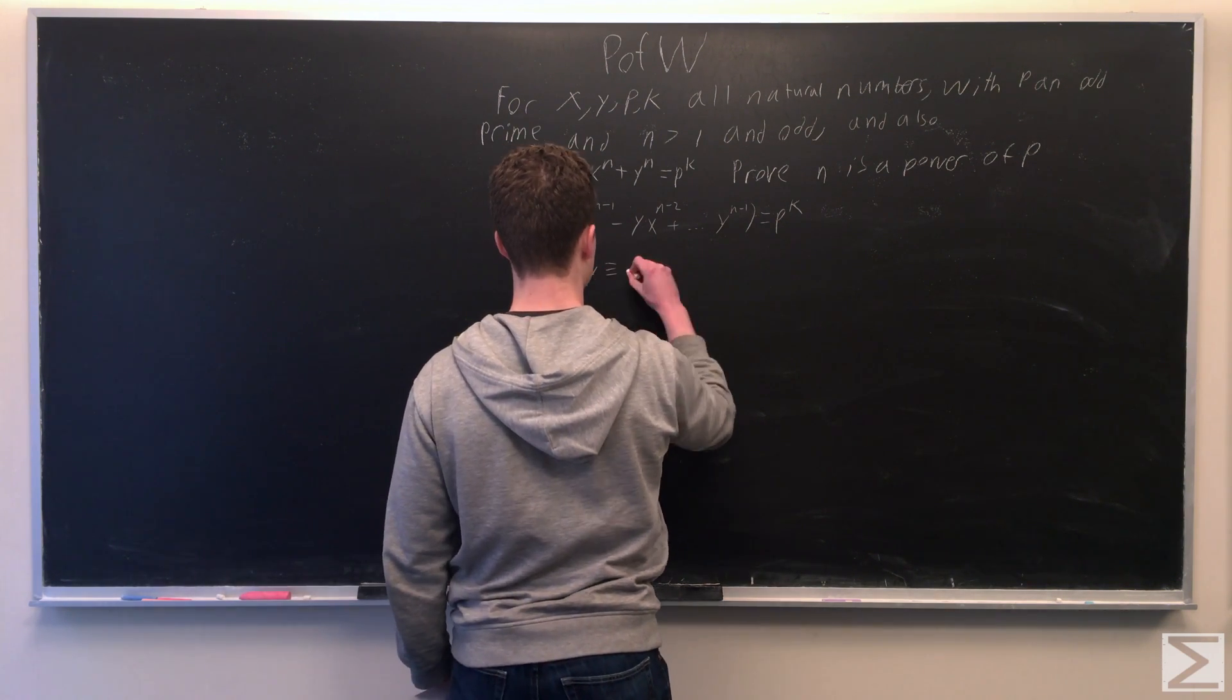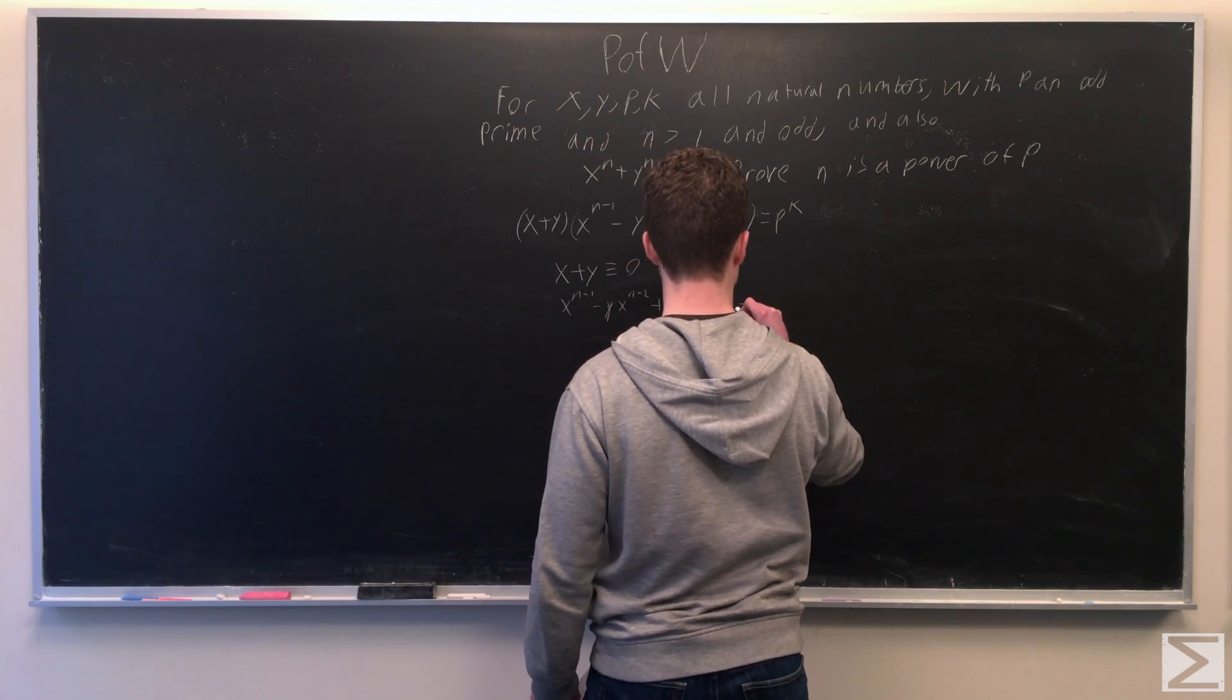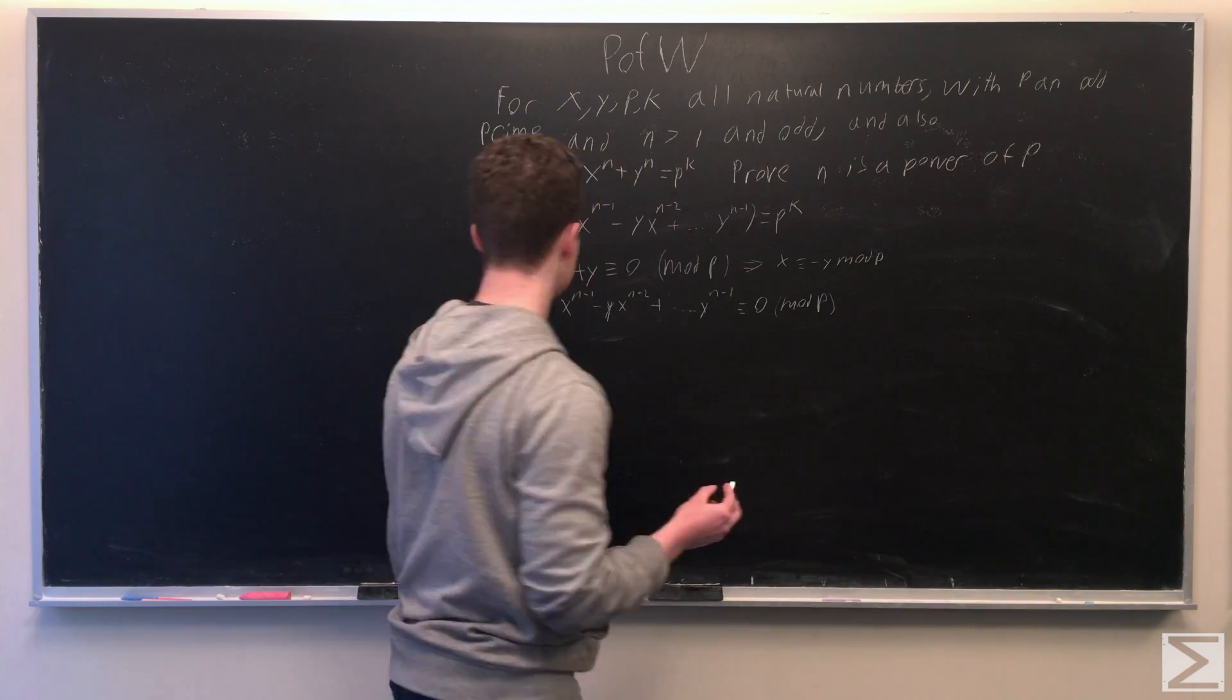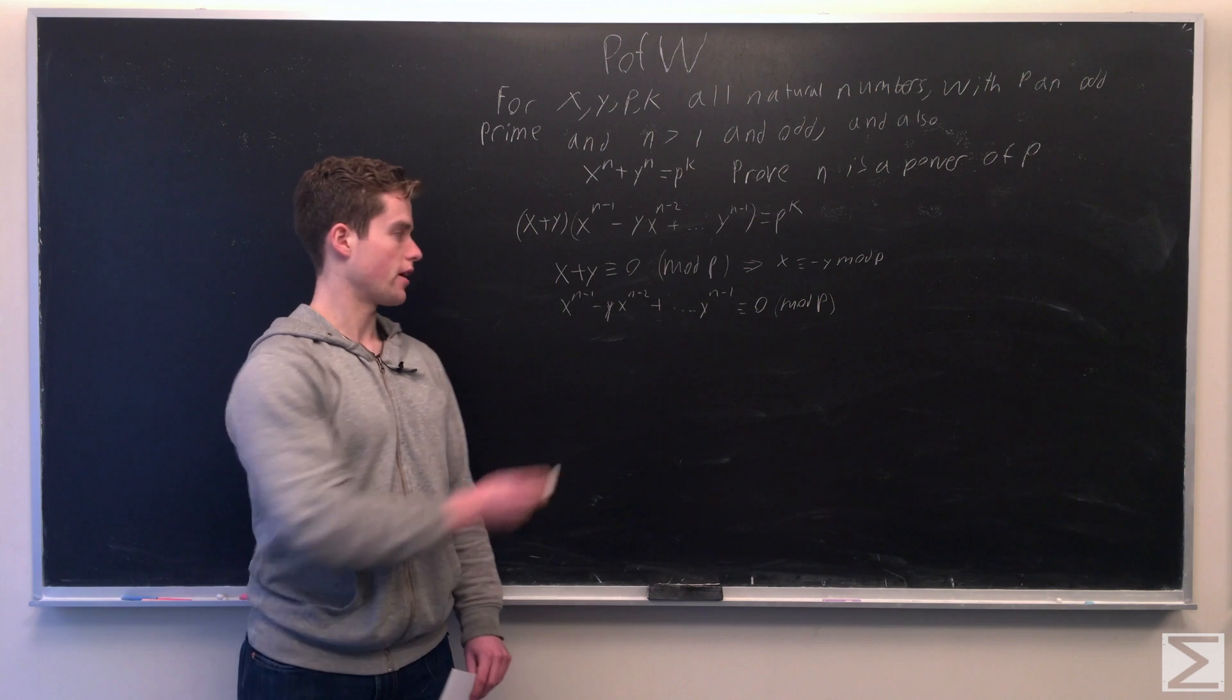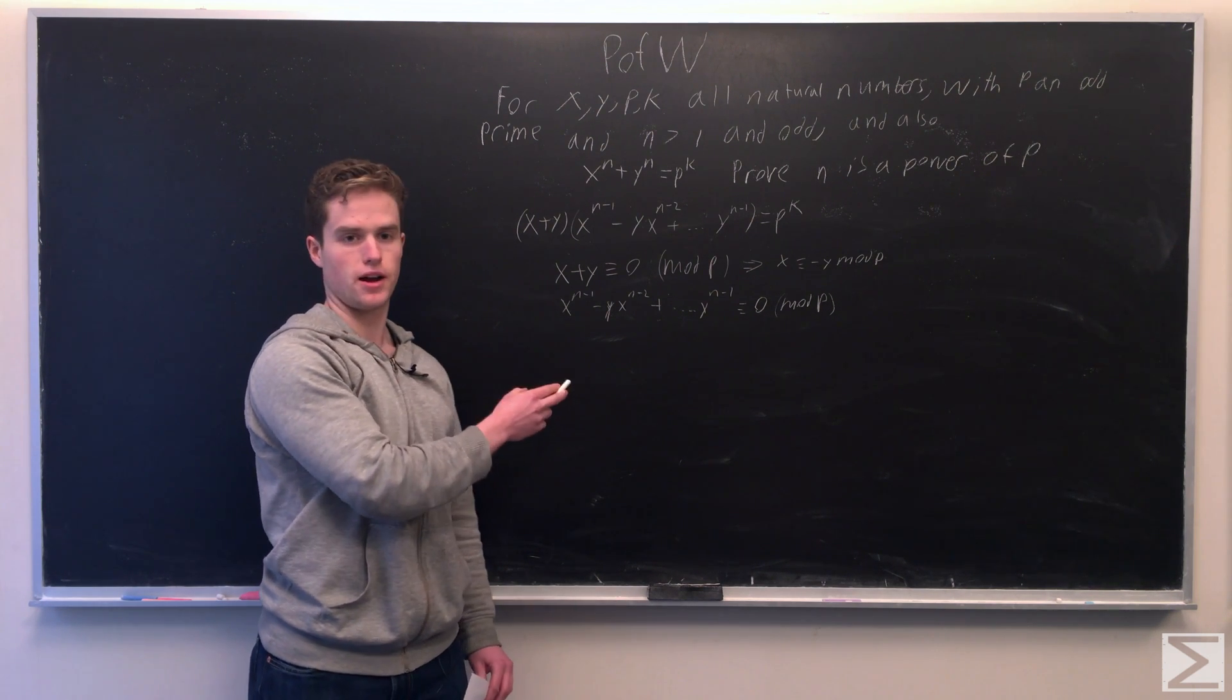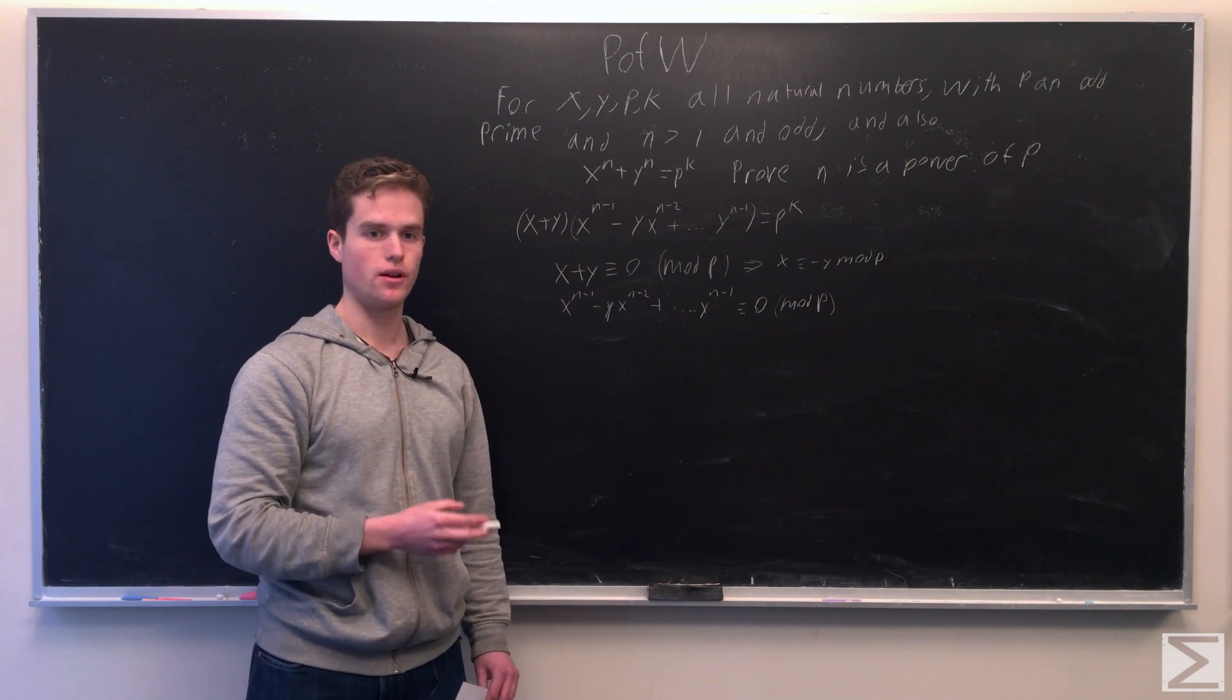So that tells us we know x plus y is congruent to 0 mod p. We know x to the n minus 1 minus y, x to the n minus 2 dot dot dot, plus y to the n minus 1 is congruent to 0 mod p as well.